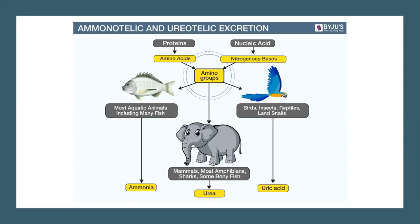Then we have ureotelic organisms. When organisms move from water to land, there are evolutionary changes in them. Water availability is low on land, so they cannot use 500 ml of water for just 1 gram of ammonia release — they have to save water. So they have undergone evolutionary changes that allow them to excrete the least quantity of water. Examples include mammals, most amphibians, sharks, and some bony fishes. Only 50 ml of water is required for removal of 1 gram of urea.